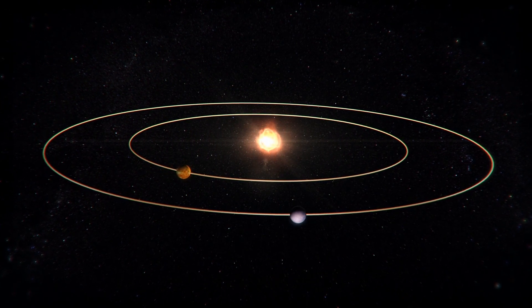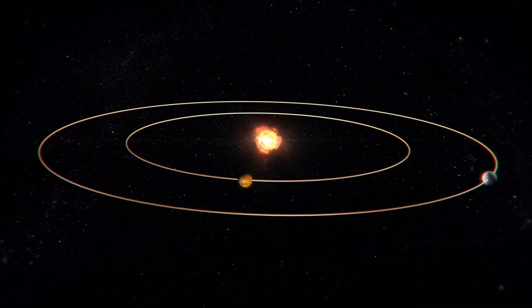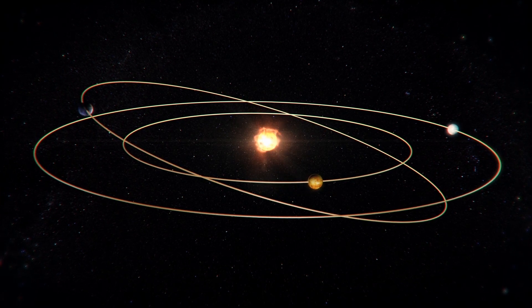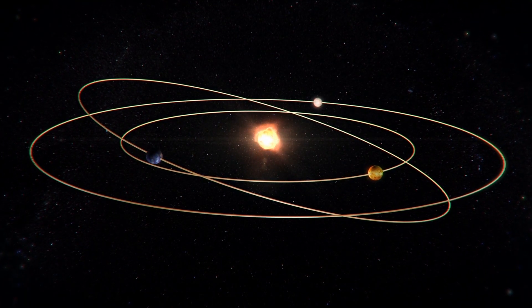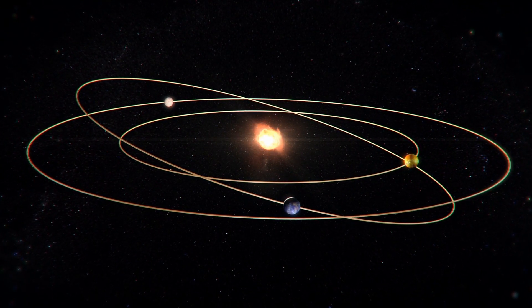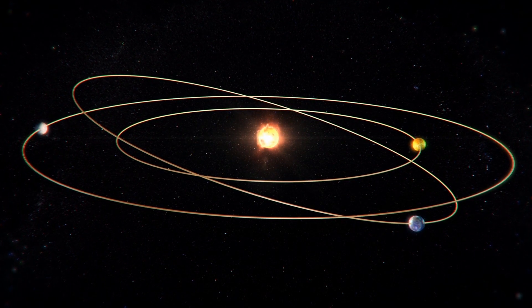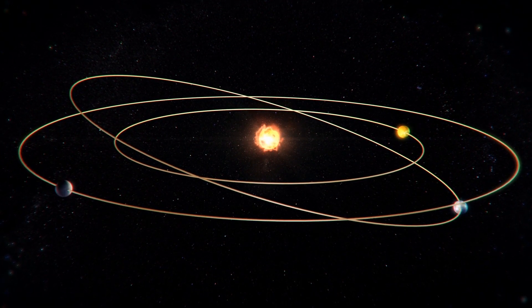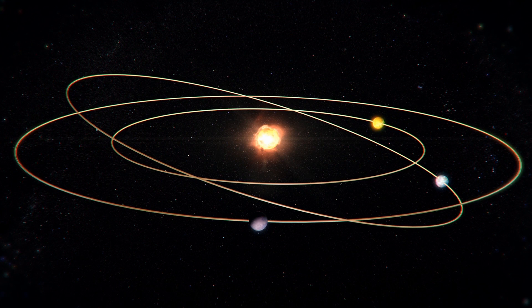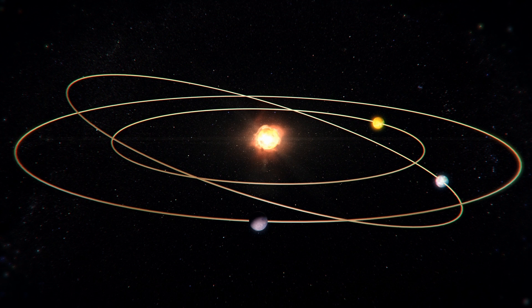Kepler-1649c has a neighboring planet, Kepler-1649b. Kepler-1649c circles the red dwarf four times for every nine times the inner planet orbits. This 9 to 4 ratio is rare and may indicate the presence of another planet, which scientists have not observed because it may be too small or have an orbital tilt that makes it hard to find.